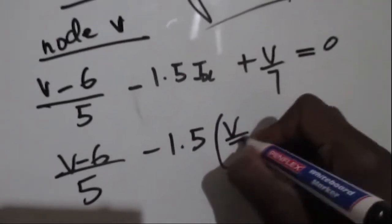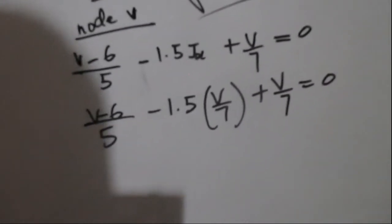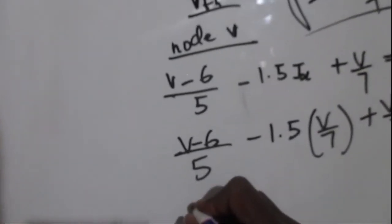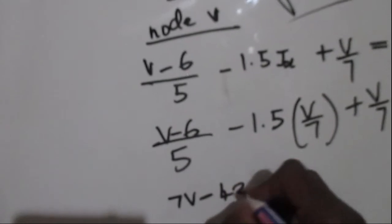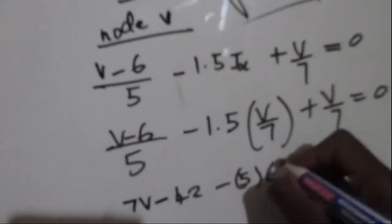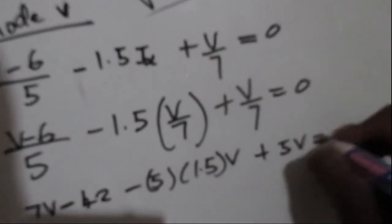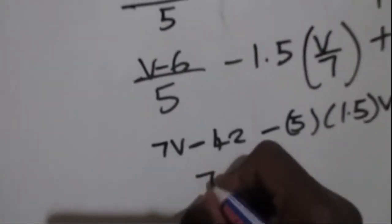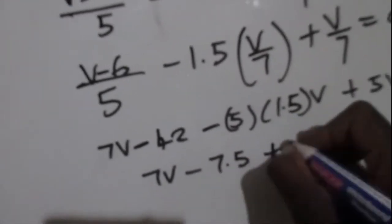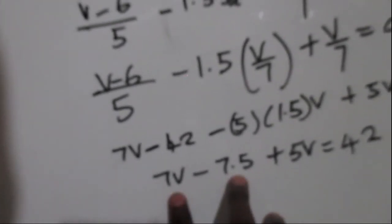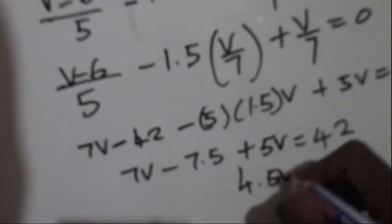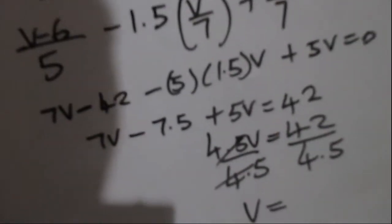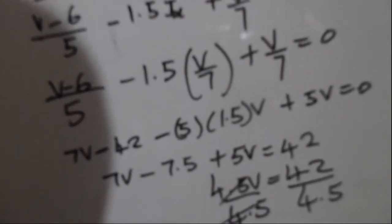Multiplying everything by 35 gives us 7V − 42 − 5 × 1.5V + 5V = 0. Simplifying: 7V − 7.5V + 5V = 42, which becomes 4.5V = 42. Dividing both sides by 4.5 gives us V.